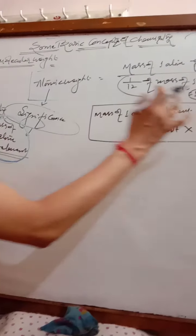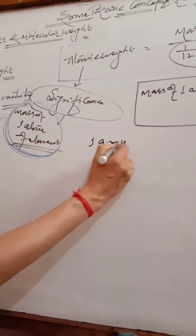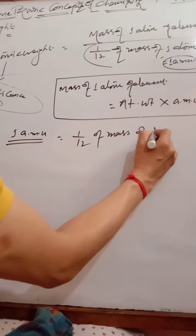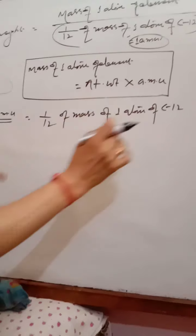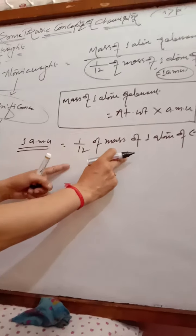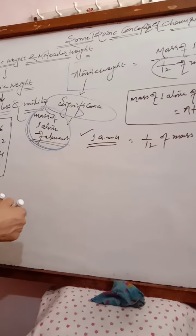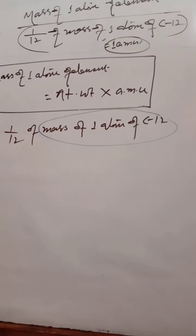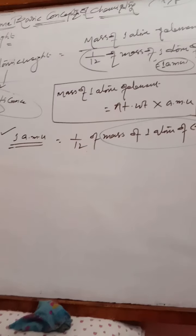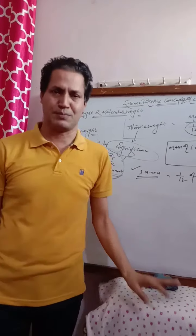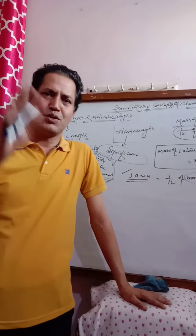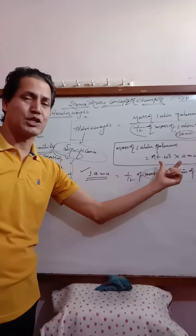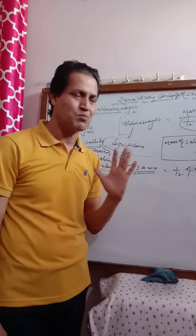One amu equals one-twelfth of the mass of one atom of carbon-12. To find this value, we use Avogadro's number: 6.022 × 10²³ atoms of carbon-12 have a mass of 12 grams. So, mass of one atom of C-12 = 12 / (6.022 × 10²³). This is the basis of the mole concept.